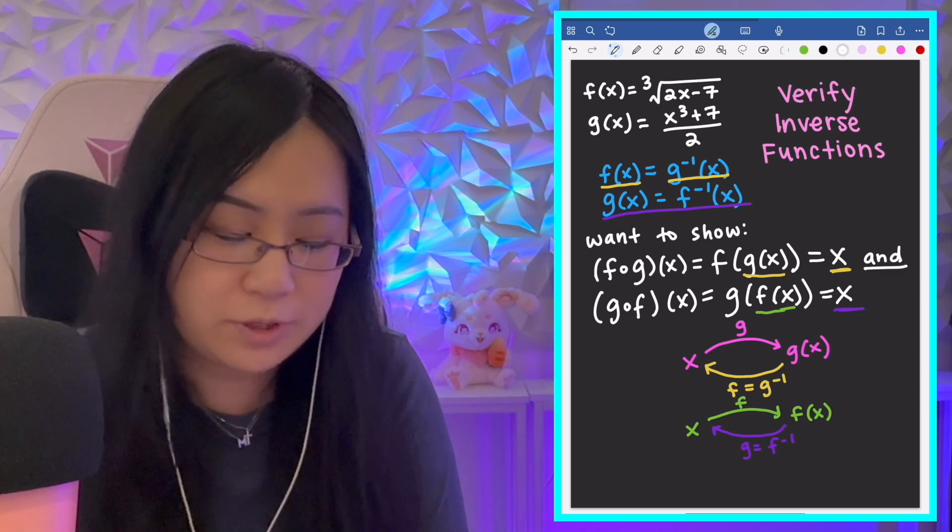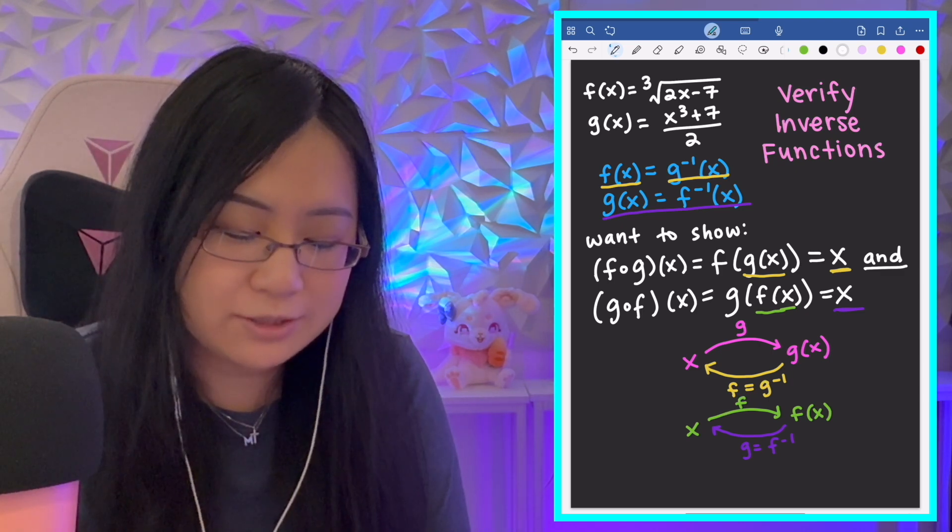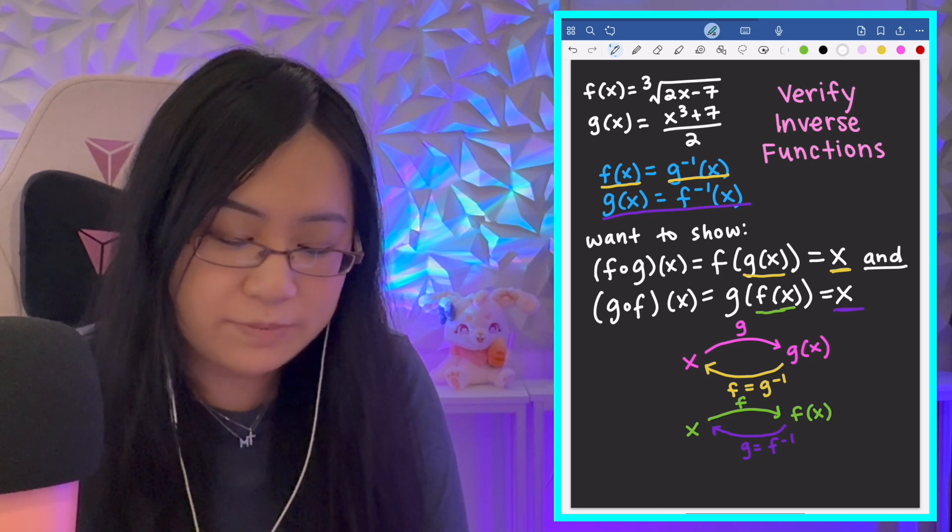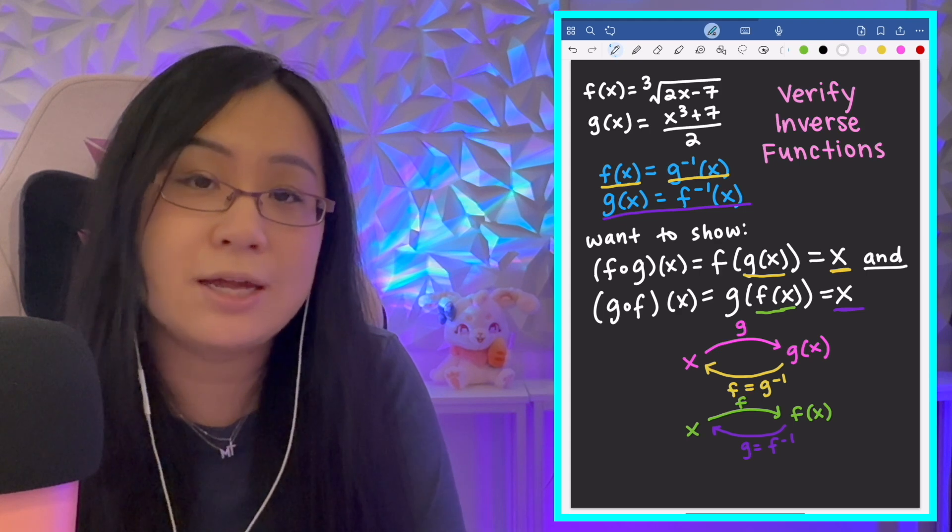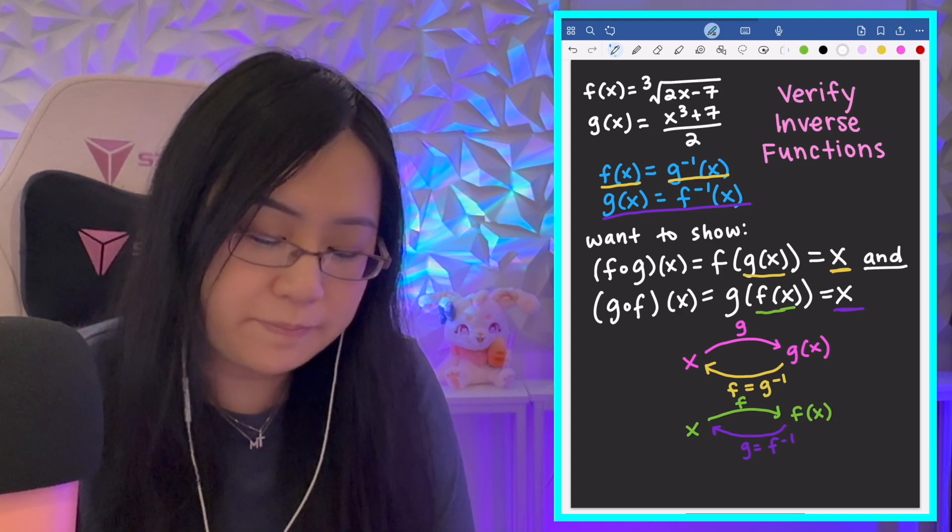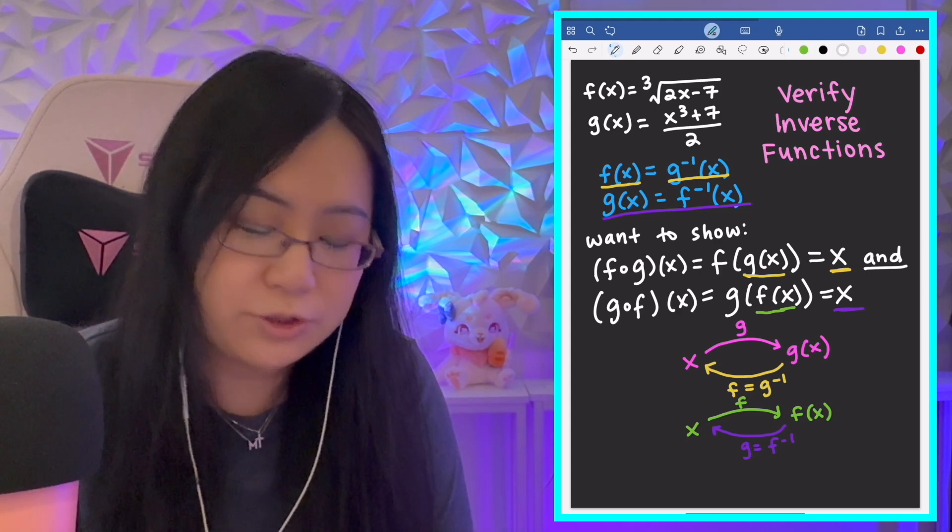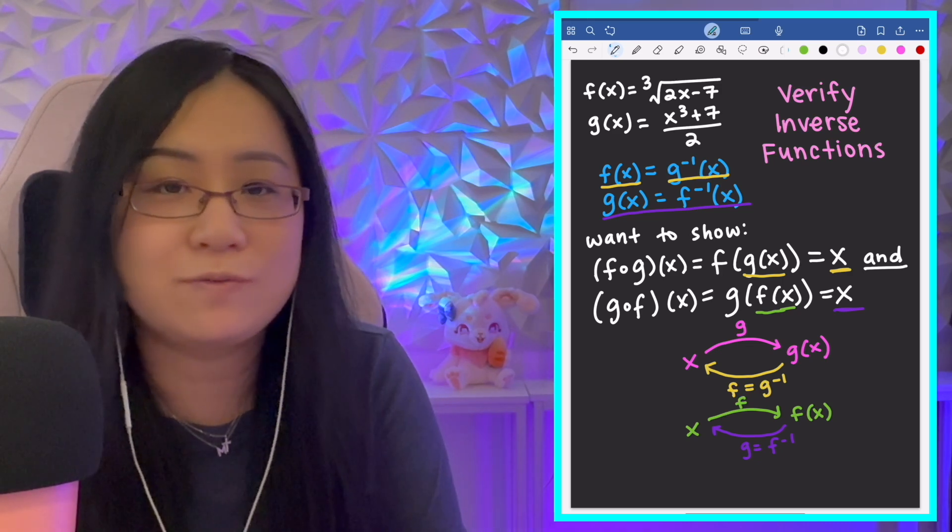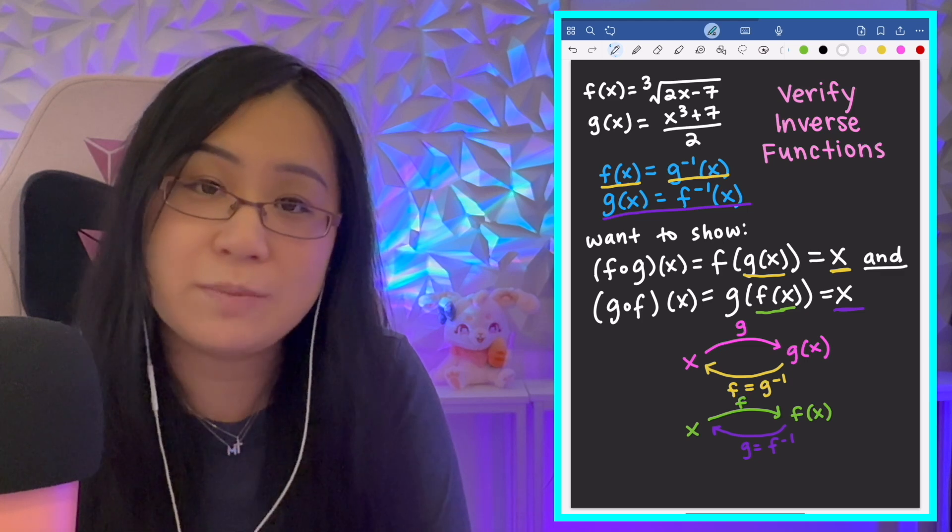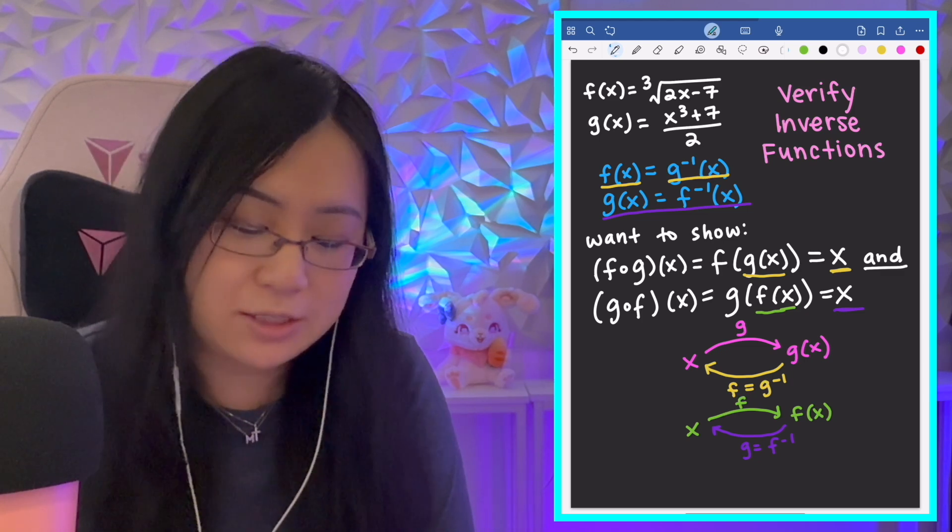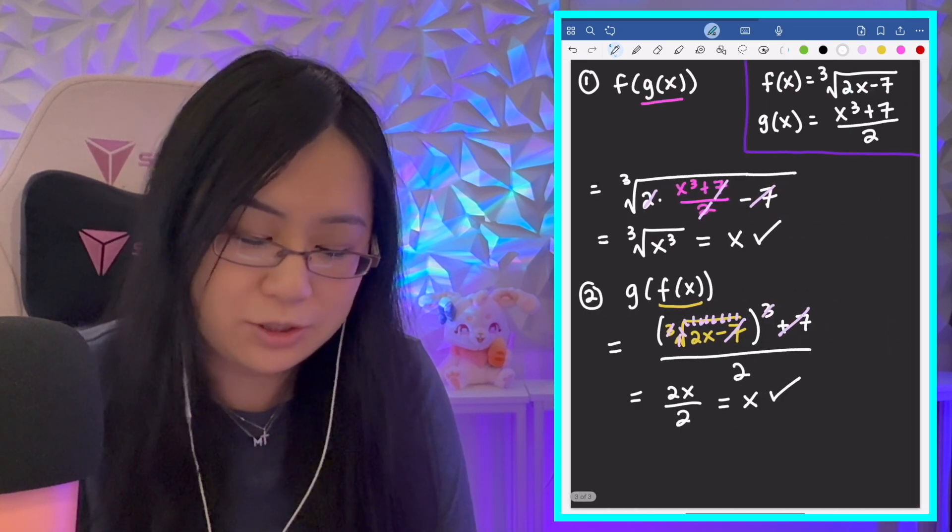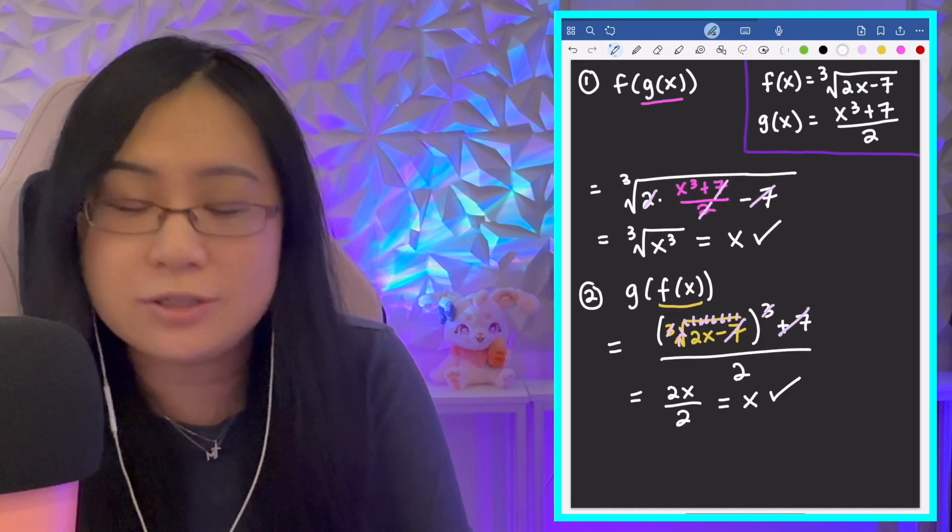So, really, you just need to remember that this is what we're doing, just the compositions and how they work, that they need to equal x. And then you just need to know which function to plug in and how that actually works, and then just be careful with the simplifying. But I would say those are the two main tools here that we are applying, and then you should be good to go.